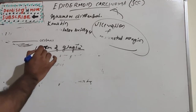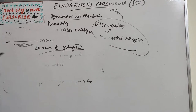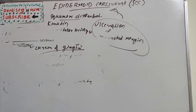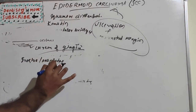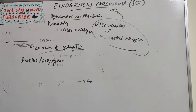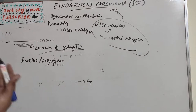Carcinoma of the gingiva is commonly found in the mandibular gingiva. Its similarity to common dental infections like periapical abscesses frequently leads to delayed or misdiagnosis. It initially presents as an area of ulceration which may be purely erosive or exhibit exophytic growth. It arises more commonly in edentulous areas, and the attached gingiva is more commonly involved than marginal gingiva. Erosion of the underlying bone is frequent, and metastasis is more common from the mandibular gingiva. Treatment combines surgery and radiation.